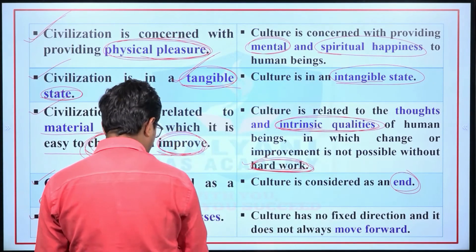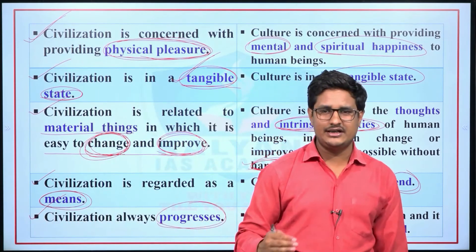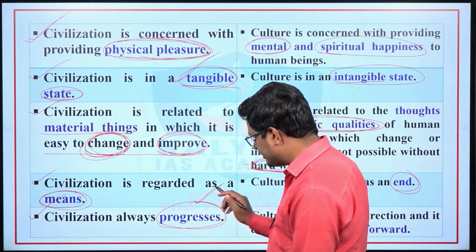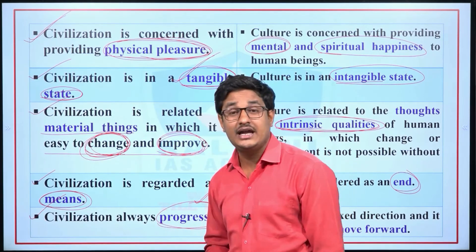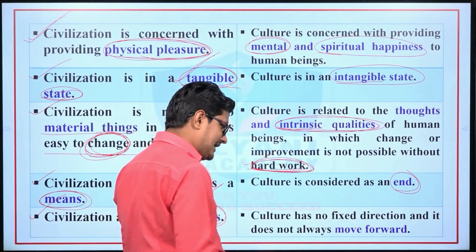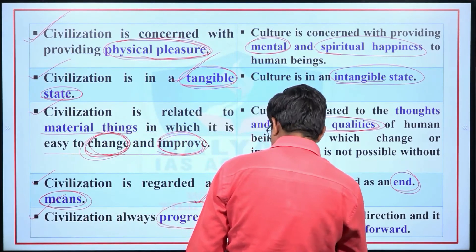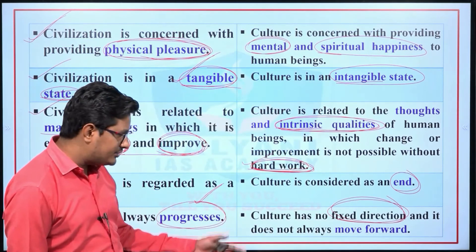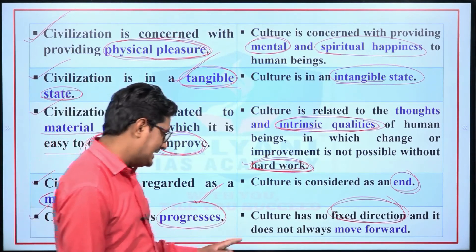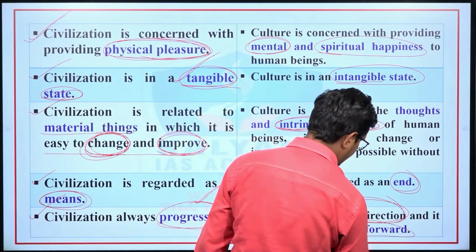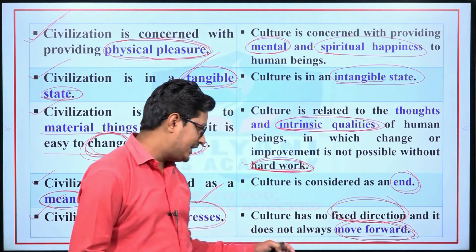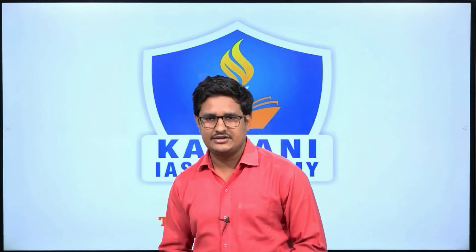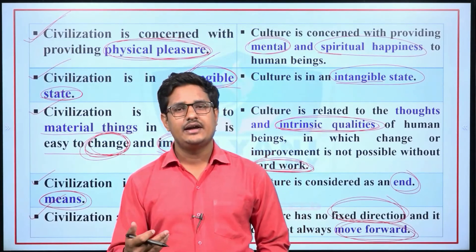Eighth difference: civilization always progresses. As human needs change, utility changes, and accordingly civilization changes and progresses. Whereas culture has no fixed direction for its progress, and it does not always move forward. So civilization always progresses, while culture's progress has no fixed direction. This was the difference between culture and civilization.